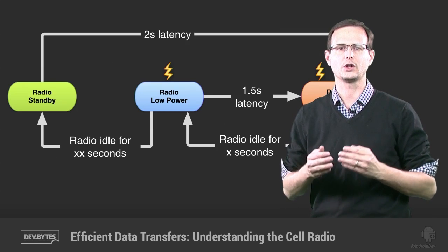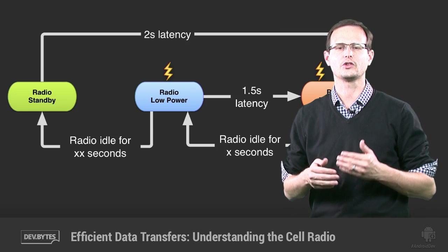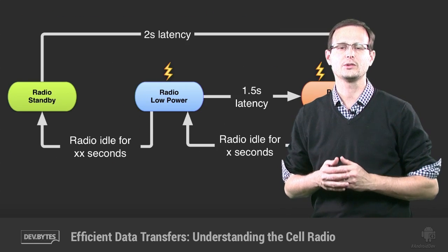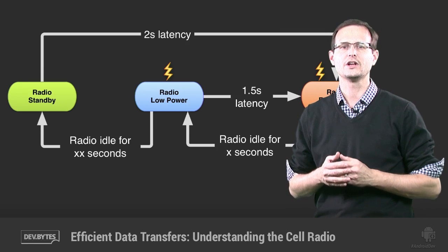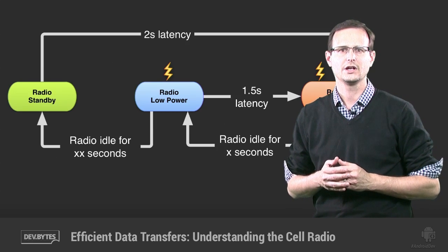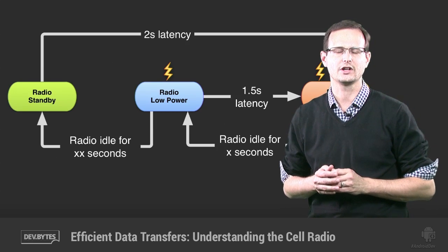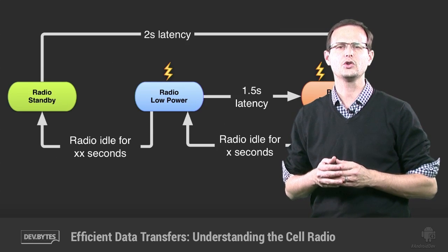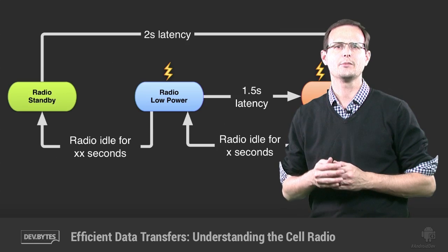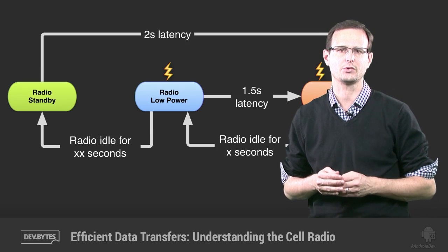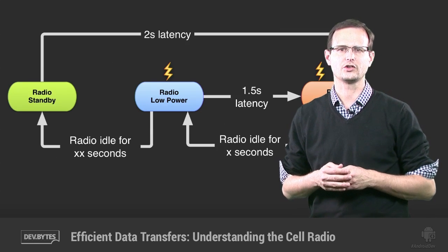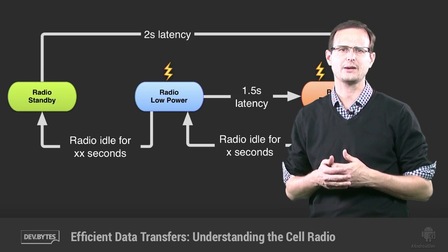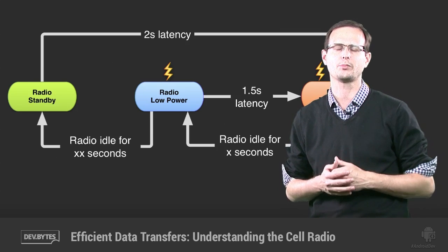This happens because dropping to a low power state reintroduces the power-up latency. Not only that, but transitioning between states in and of itself is a significant power drain. If nothing happens during the five to ten second tail time, the radio drops to an intermediate low power state that uses less battery than full power, but has a lower startup latency than standby. If a new transfer is initiated, it will be promoted back to full power mode, and if nothing happens for another 30 seconds to a minute, it'll drop back to standby.